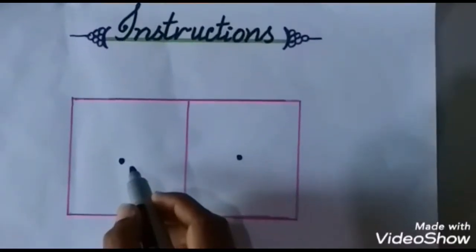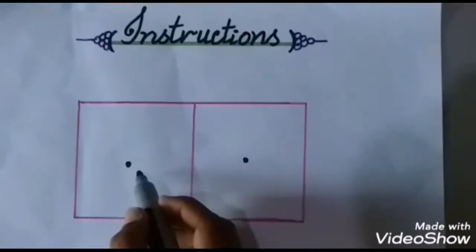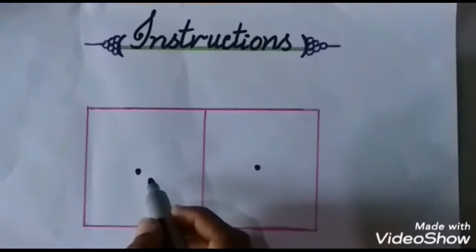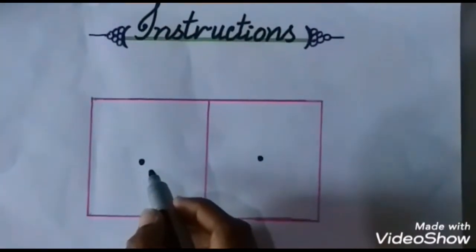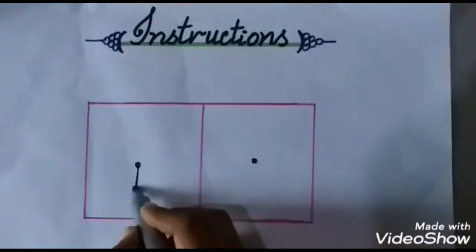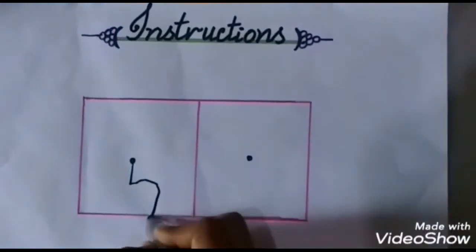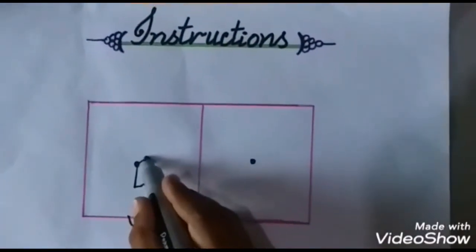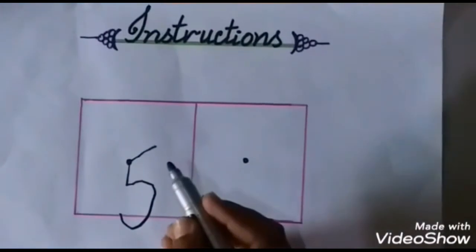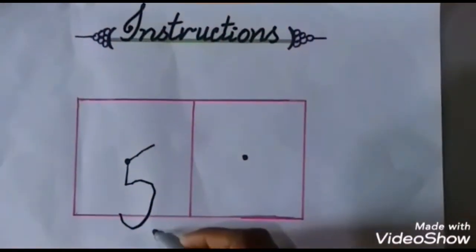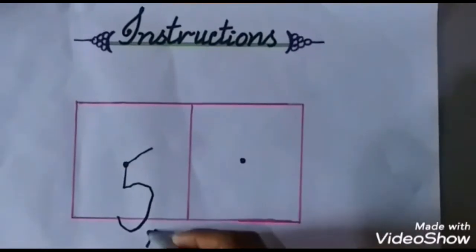Okay students, now teacher will guide you and give you instructions how we write digit 5. Some students do writing just like this. They start here and make a stick line and not make a correct belly. And make a slip line just like that. Oh, this is not good. This is not good. And teacher will not give you a star.